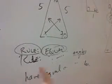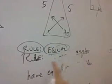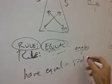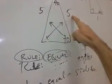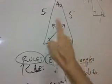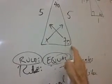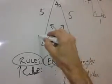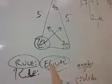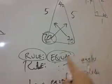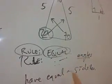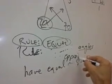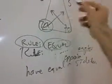The rule is equal angles have equal opposite sides. So if this is 5 and this is 5, the side opposite the angle, there's 70, so this has got to be 70 also. So that's the first rule. Equal angles have equal opposite sides. The sides opposite the angles will be equal.